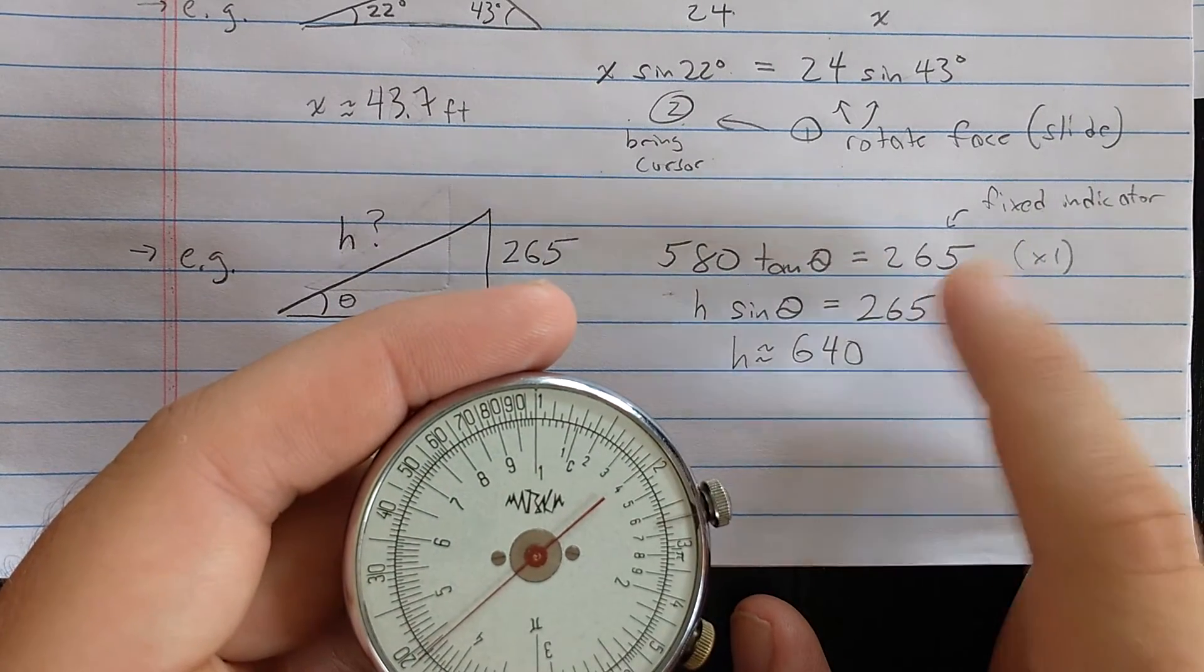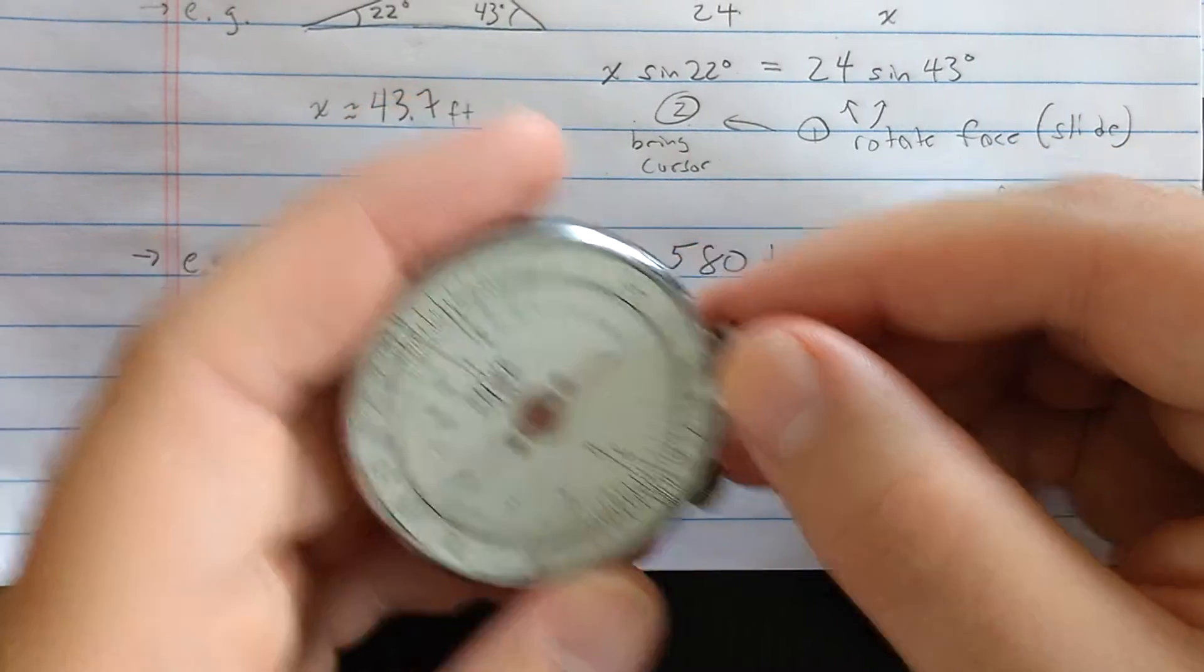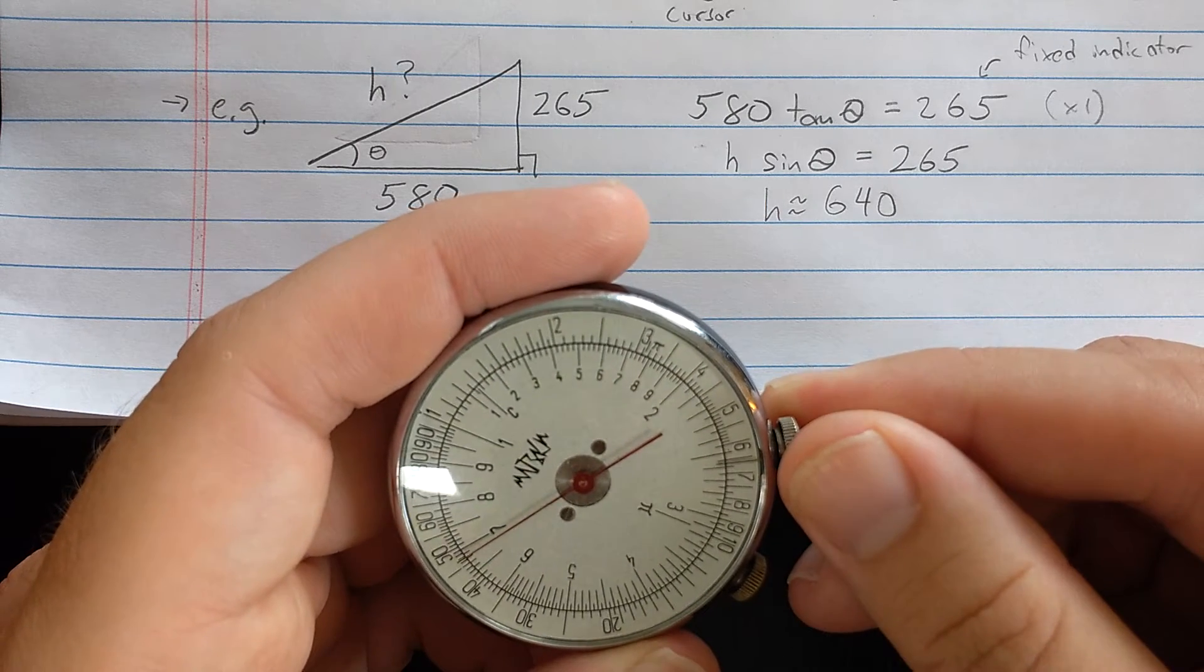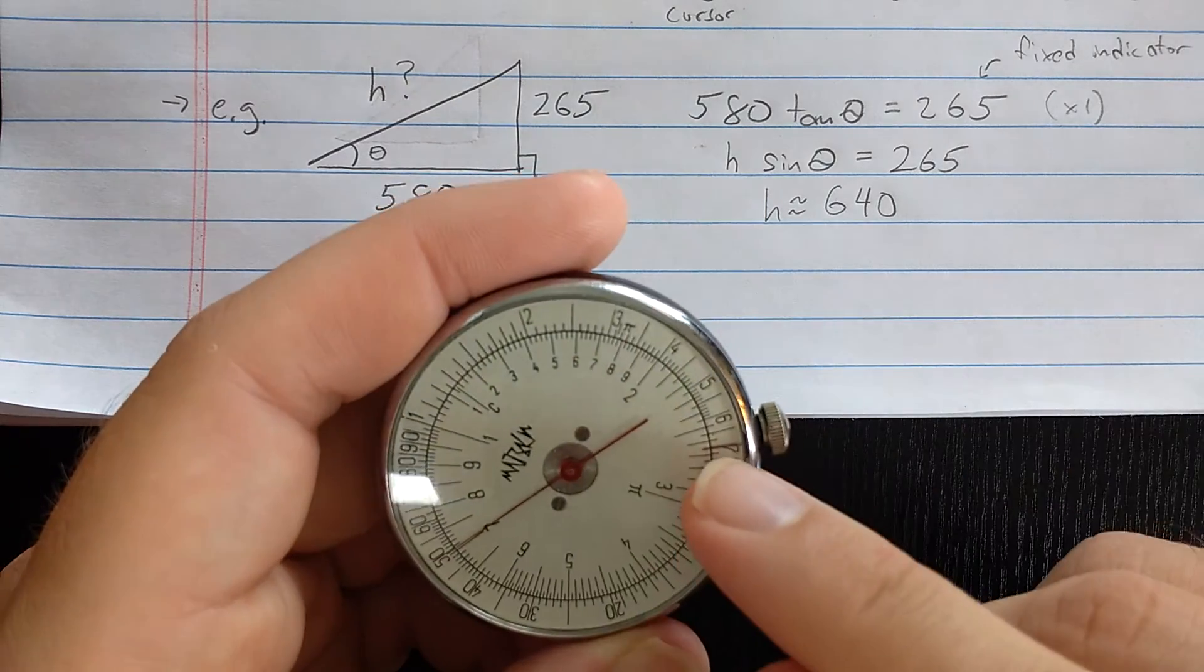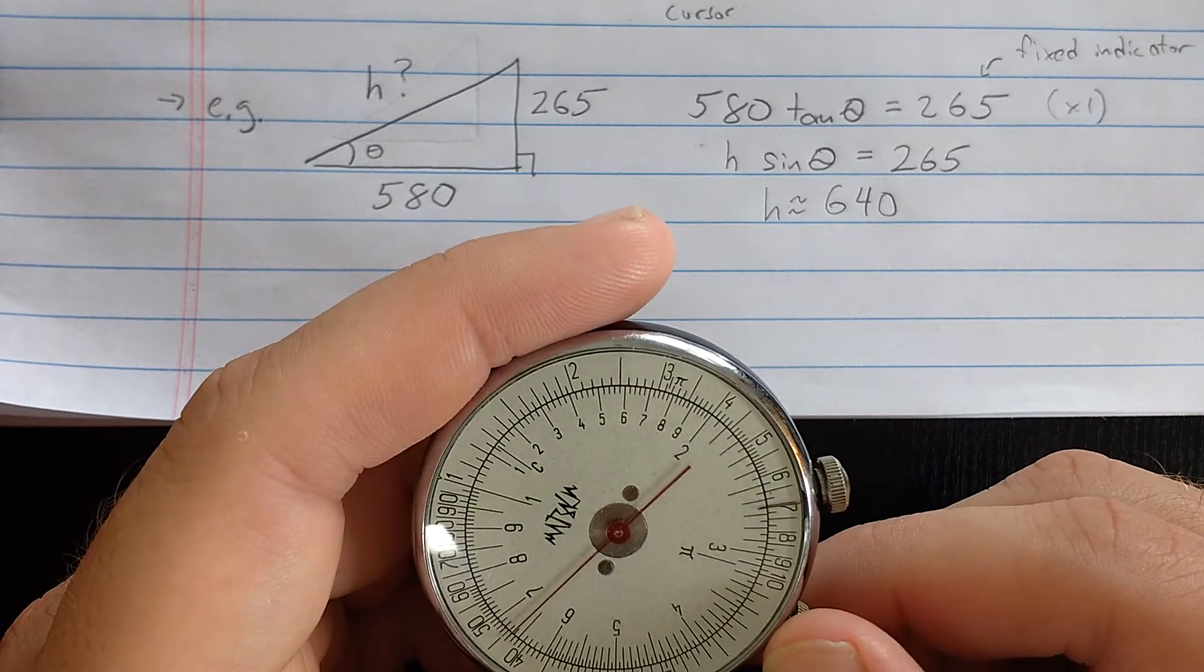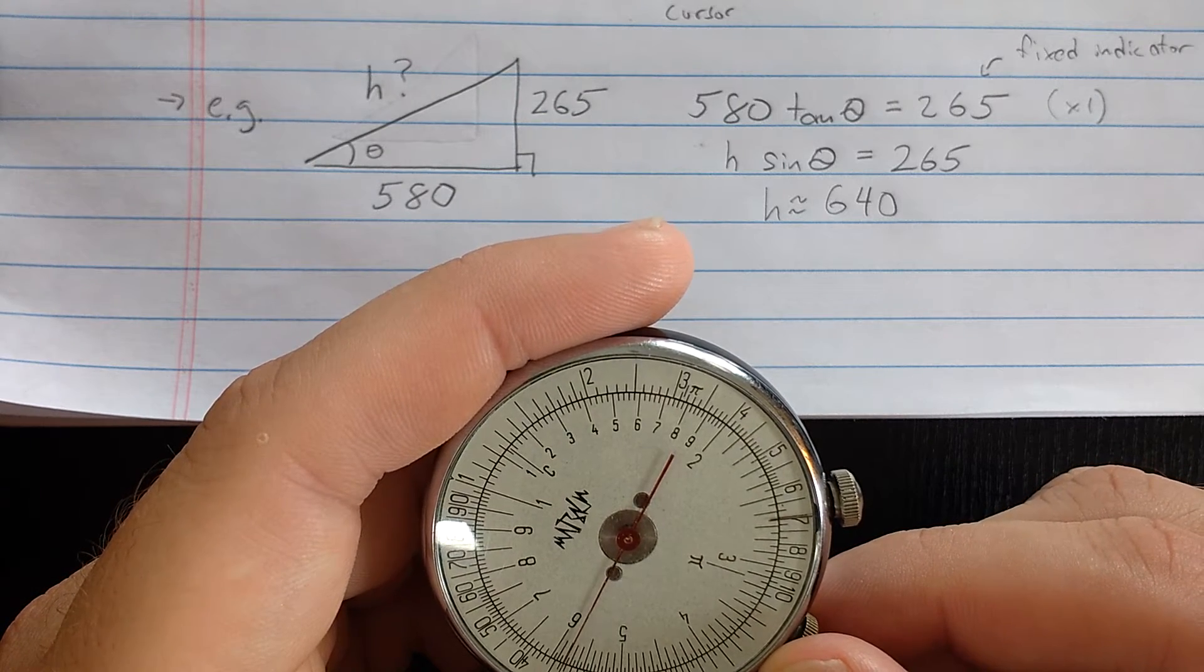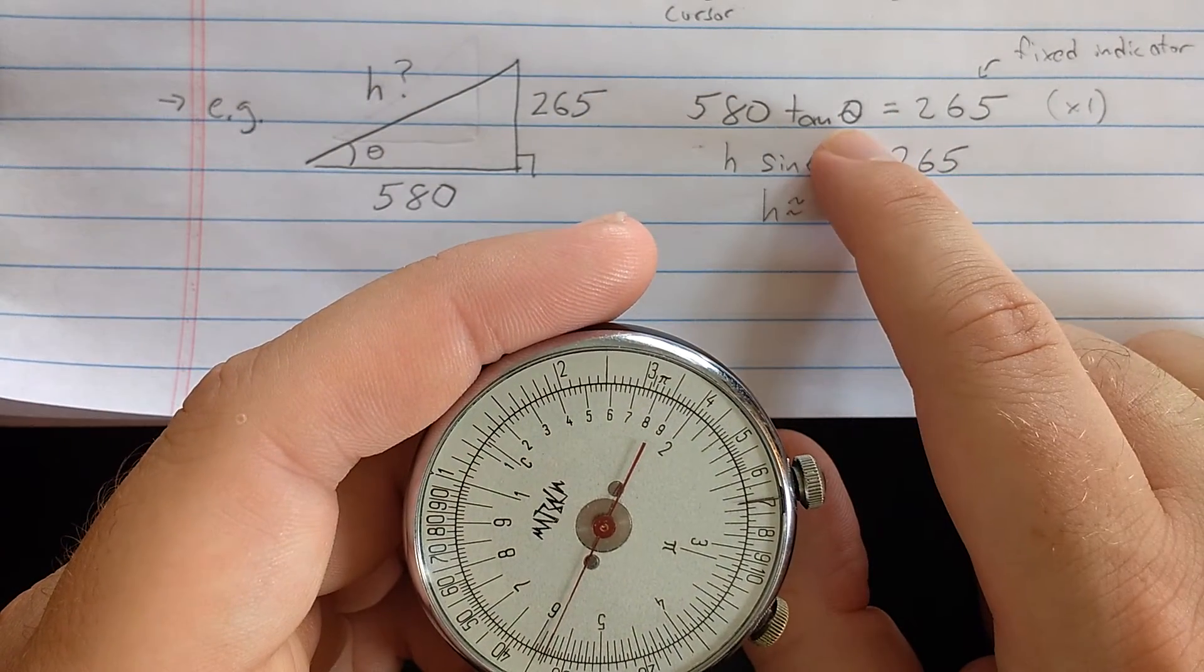The first thing I'll do is I'll move the fixed indicator to this 265. So the fixed indicator here is at 265 by my thumb. Then I'll move the needle to this 580. 5, 6, 7, 8.